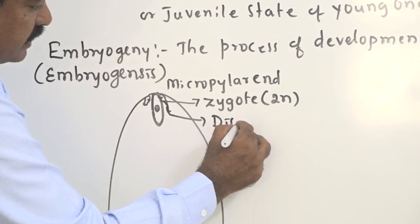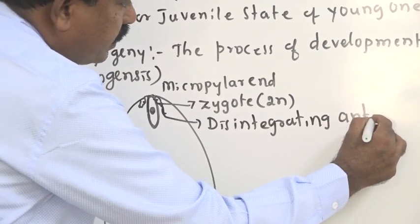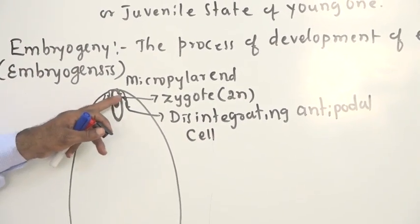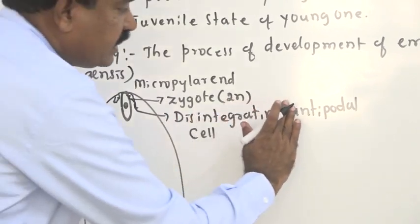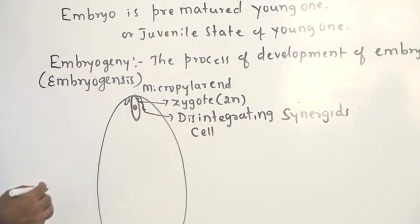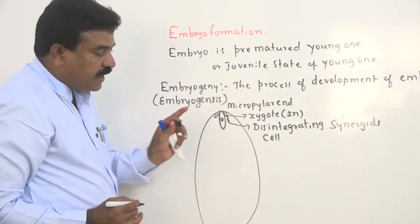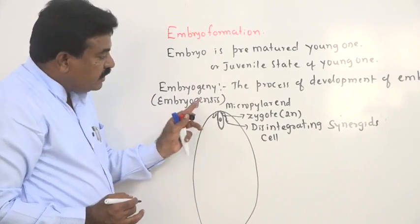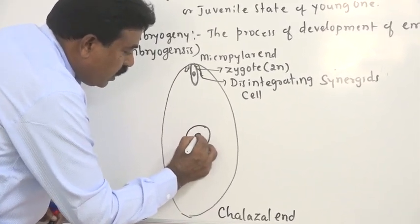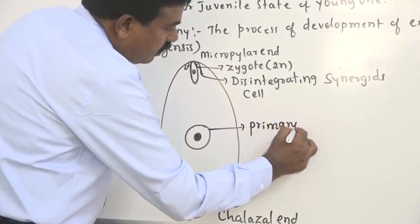In the mature embryo sac, functional synergids are present. But now they have no role because the role of synergids is to guide the pollen tube to enter into the egg. Since fertilization is already completed, these synergids undergo disintegration. At the center we have one triploid cell that we call the primary endosperm cell.